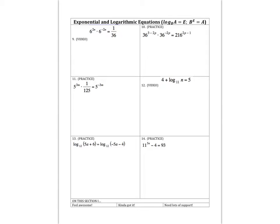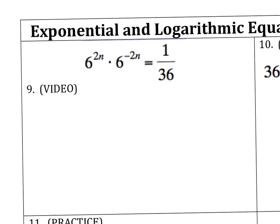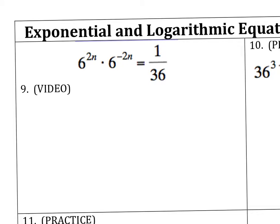Next up, we've got some exponential logarithmic equations. Some of these are going to be log equations, and some are going to be equations that involve using logs. For the first one, we've got 6 to the 2n times 6 to the negative 2n is equal to 1 over 36.